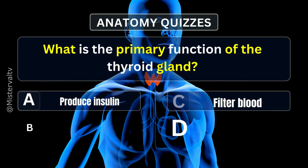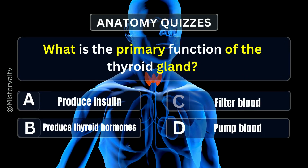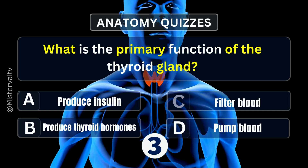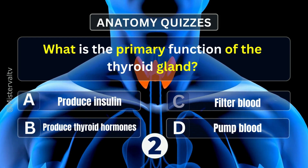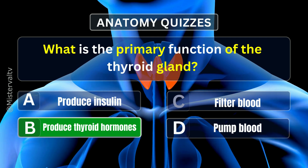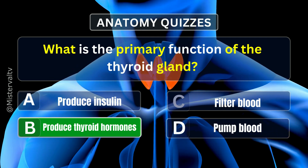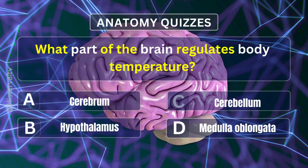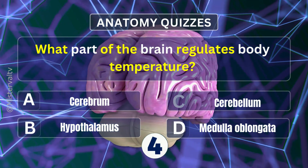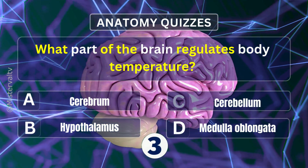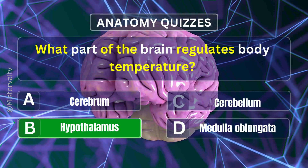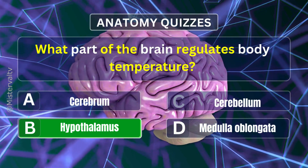What is the primary function of the thyroid gland? Answer. B. Produce thyroid hormones. What part of the brain regulates body temperature? Answer. B. Hypothalamus.